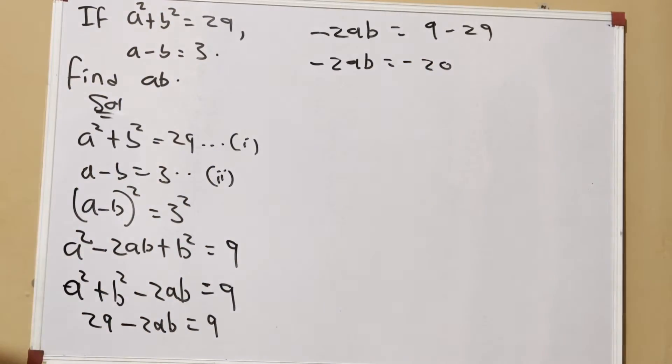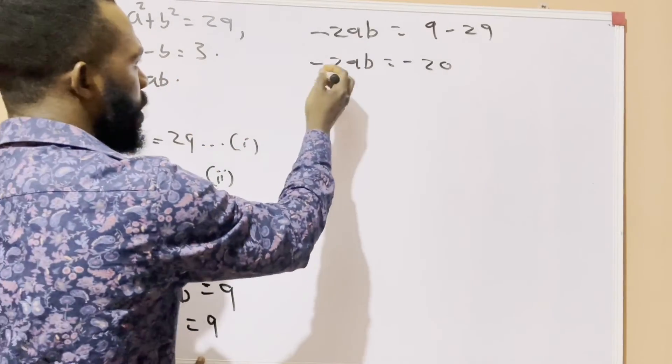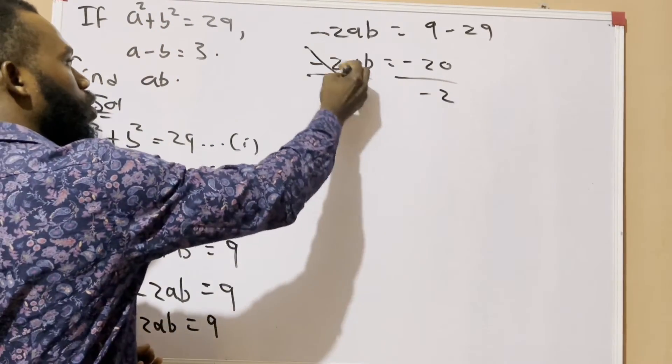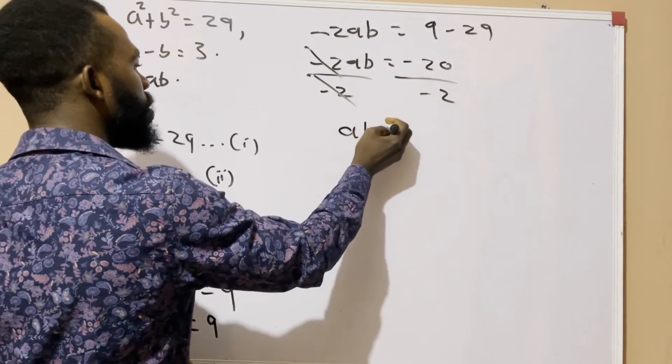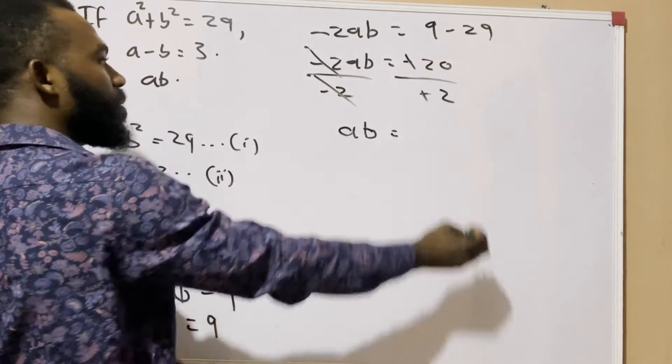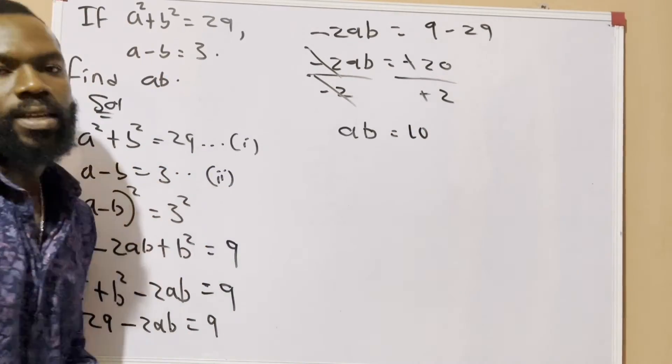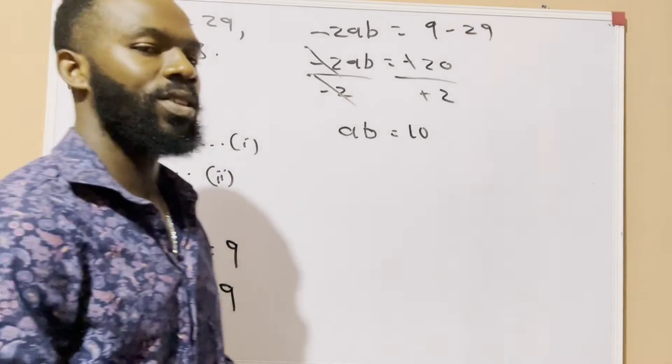For us to get the value of ab which we are supposed to look for, we have to divide both sides by -2. When we divide both sides by -2, you see the value of ab in this question is 10.